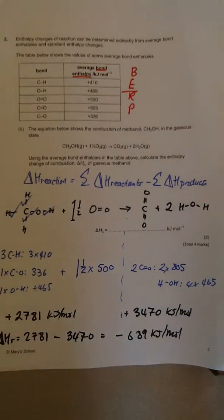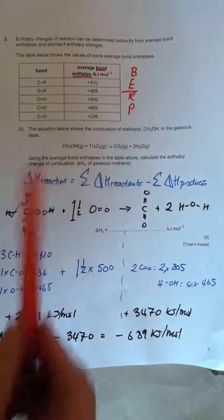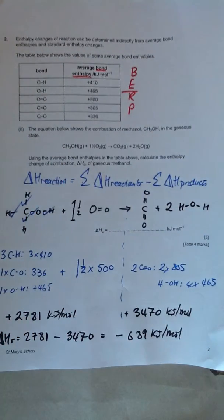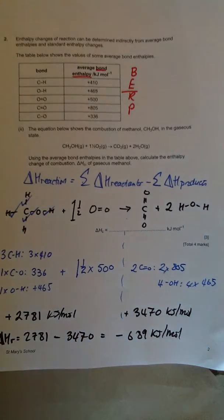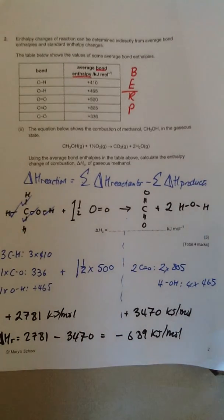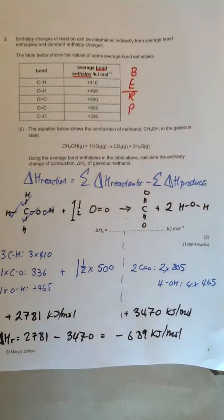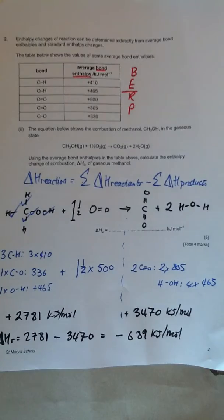So does that look sensible? Well, if you burn ethanol, if you burn an alcohol, remember it's used as fuel, it gives out heat, you'd expect the surroundings to get hot. That would mean it's an exothermic reaction. Exothermic reactions have a negative sign, so yeah, that makes sense. It looks like that number looks about right.